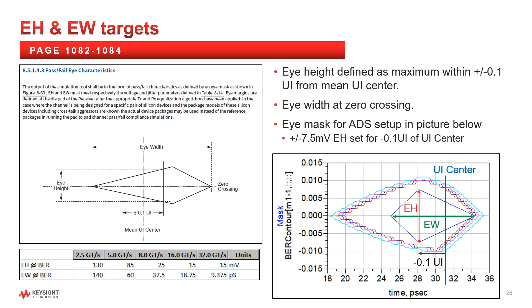Eye height and eye width targets. Lastly is the spec requirements for the pass fail eye height and eye width. These values are shown at this bottom table. For 32 gigatransfer, the eye height requirement is 15 millivolts peak to peak and 9.375 picoseconds eye width. The spec defines a range for measuring the eye height with a maximum value taken within plus or minus 0.1 UI from UI mean center. The eye mask that was put together for usage in ADS is shown in the lower right figure.